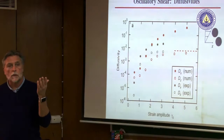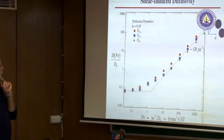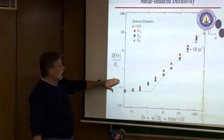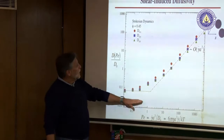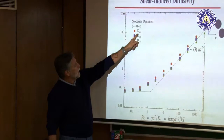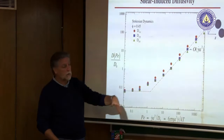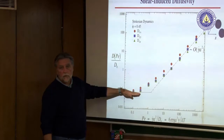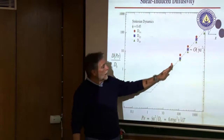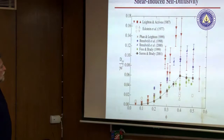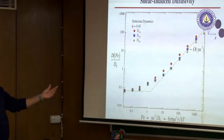So shear-induced diffusion exists. These results show the Péclet number dependence of the diffusivity normalized by Stokes-Einstein-Sutherland as a function of non-dimensional shear rate, in three directions: vorticity, velocity gradient, and flow direction. The diffusivity is isotropic even though the flow is not. It transitions from long-time self-diffusive behavior at low Péclet number to growing linearly with shear rate (scaling as γ̇a²) at high Péclet number, as expected from dimensional arguments.